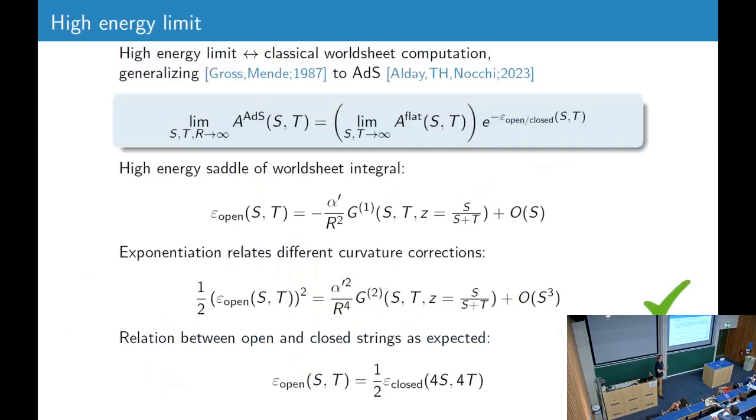The next check is the high-energy limit. So the high-energy limit can be independently computed by classical computation, as was done in flat space by Gross and Mende. And we generalize this to AdS, and I think Fernando will also talk more about this on Friday. The final result is that if we take S, T, and R all to infinity at the same rate, we get the high-energy limit of the flat space amplitude times this exponential correction.